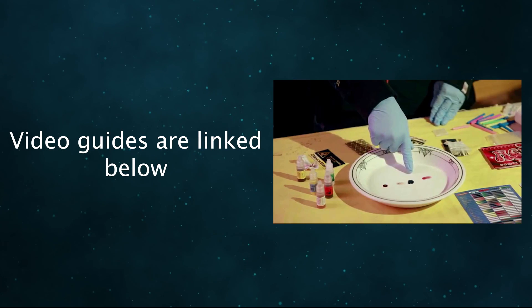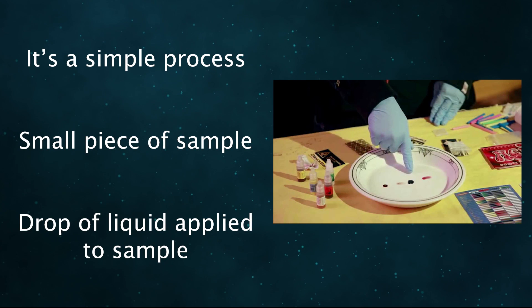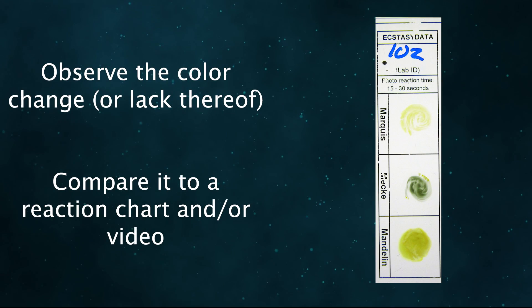As I don't yet have a video showing the testing process, I'm including links to two guides down below. The process is very simple. Use a small piece of your drug sample for testing. Apply one drop of the liquid to the substance. Now observe the color change that takes place over a period of 30 seconds.